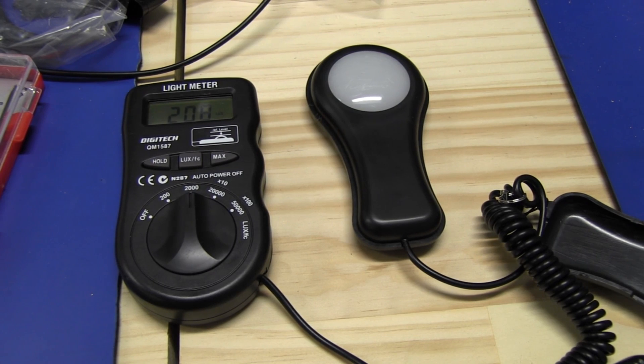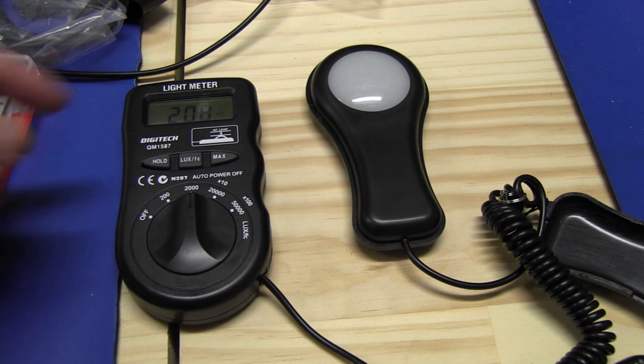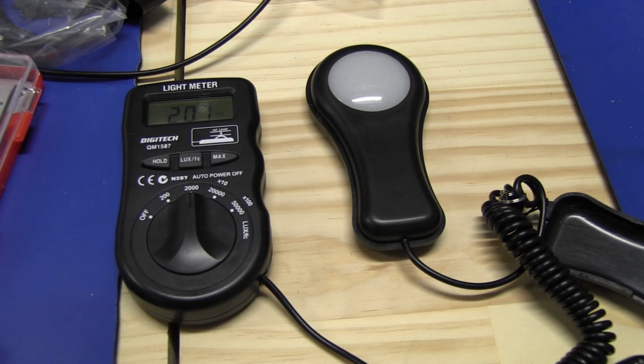Now, let's see what happens if I simply clean the diffuser up on the light luminary above me. I won't touch this. I'll leave it exactly where it is. We're getting 207, 208 lux. So let's clean the diffuser and see what happens.